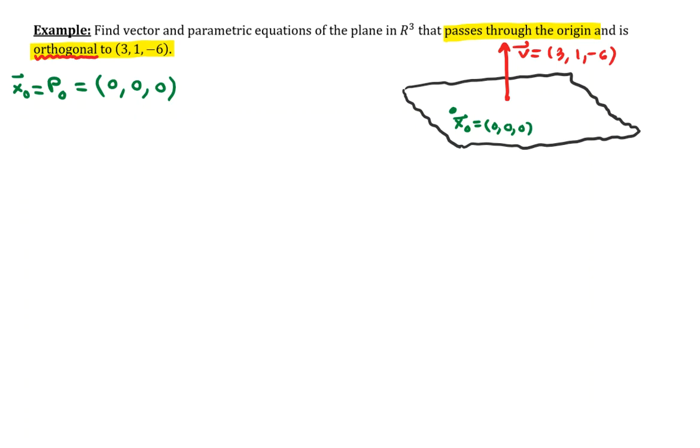This problem is going to require us having a couple of other things to help us construct the parametric equations and vector equations. Let's talk about what we're going to need. We will need the vector X sub 0, which is doubling up as P sub 0, having components (0, 0, 0), the zero vector.